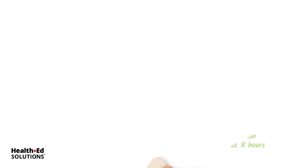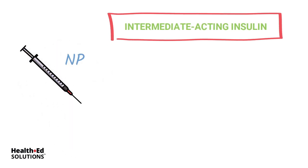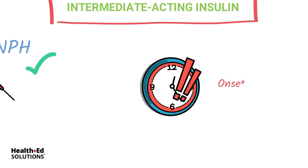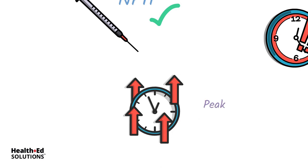Moving on to intermediate acting — you can see there is a huge difference in duration between short acting and intermediate acting. NPH is your intermediate acting insulin. NPH has an onset between one to two hours, so it will definitely be in the system and working within two hours at the most. It peaks out in about 10 hours.